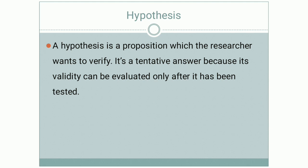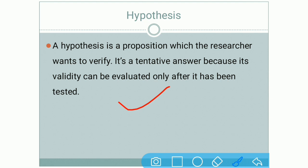We have already learned what is hypothesis. Let us understand it again. A hypothesis is a proposition which the researcher wants to verify. It is a tentative answer because its validity can be evaluated only after it has been tested. It is one assumption which the researcher wants to verify — that is, to check whether it is right or wrong.